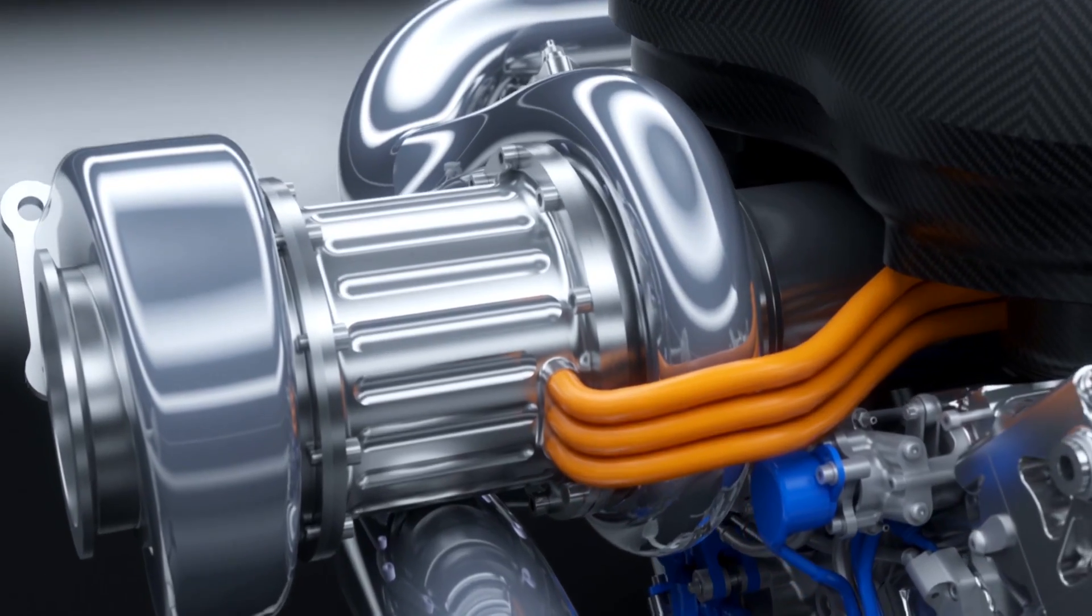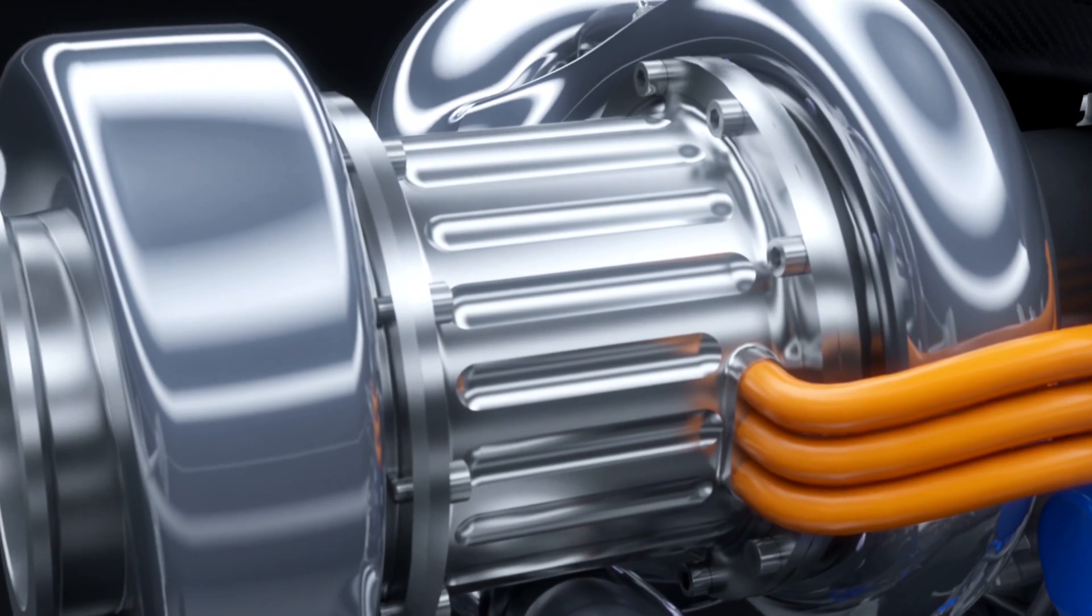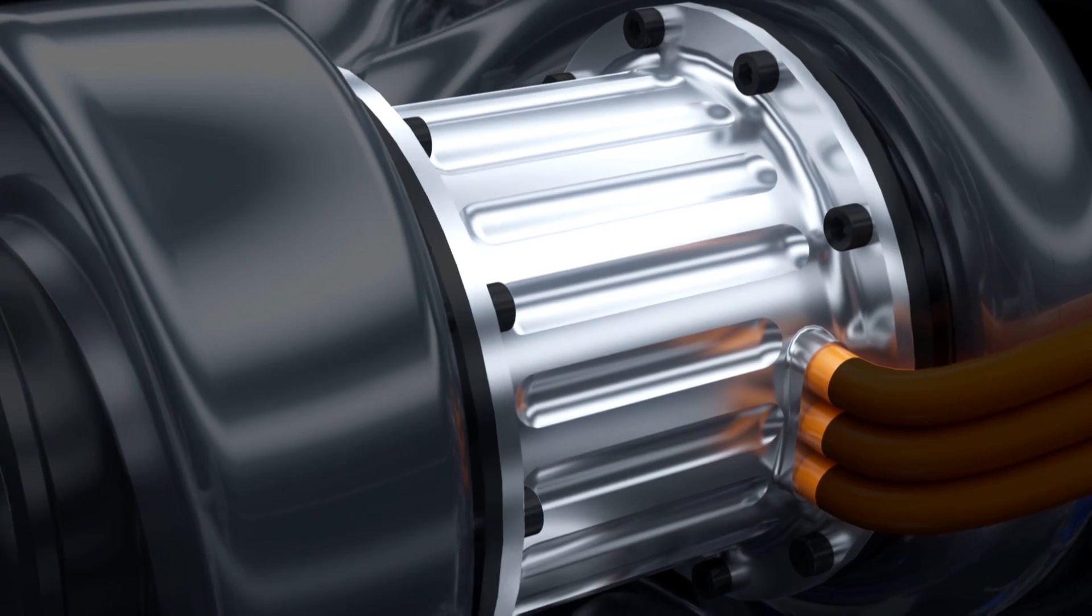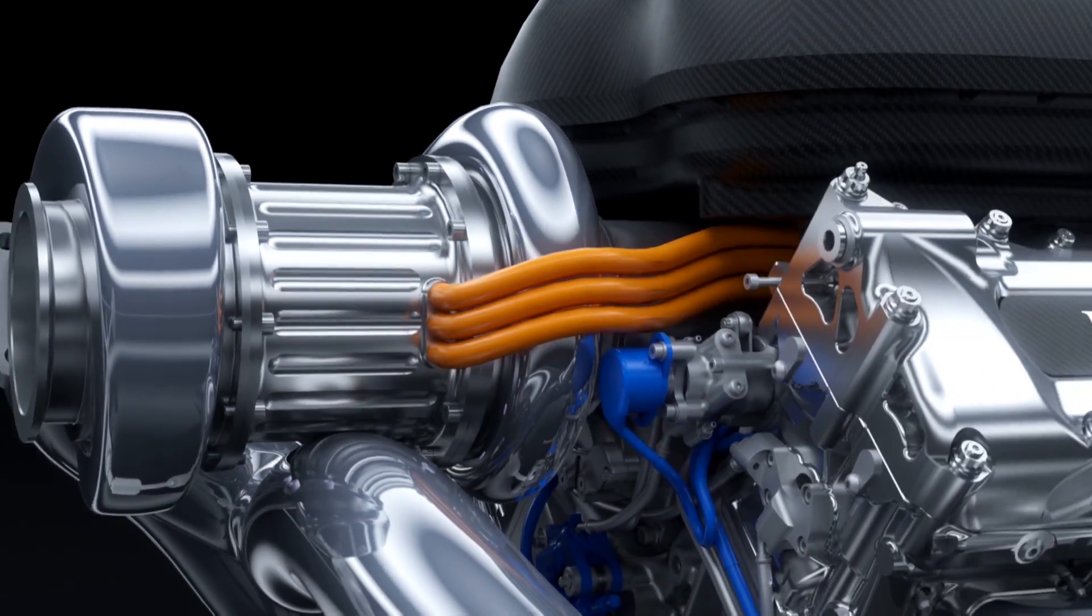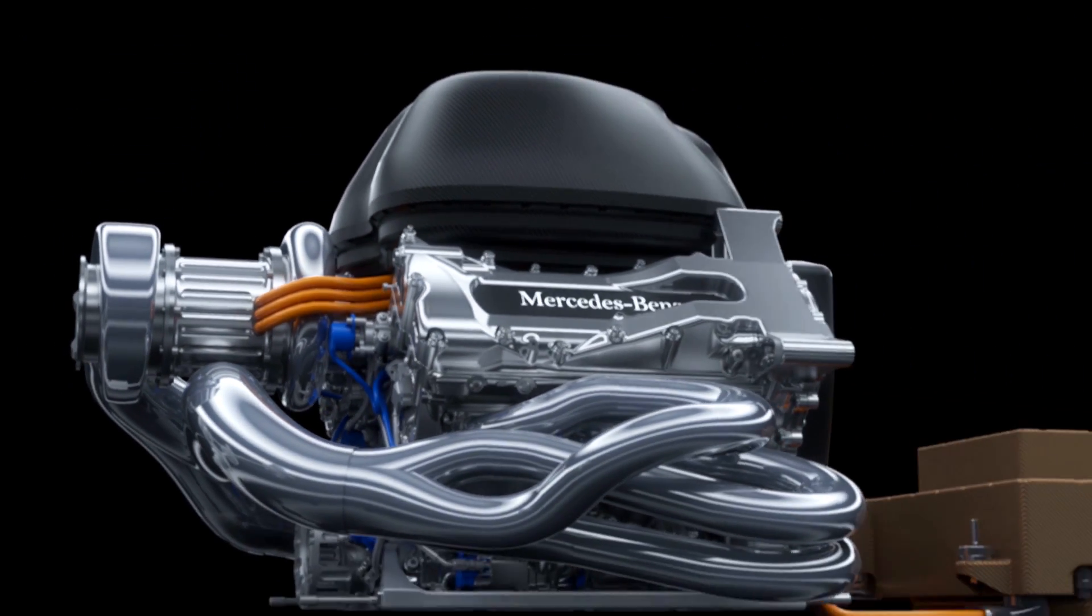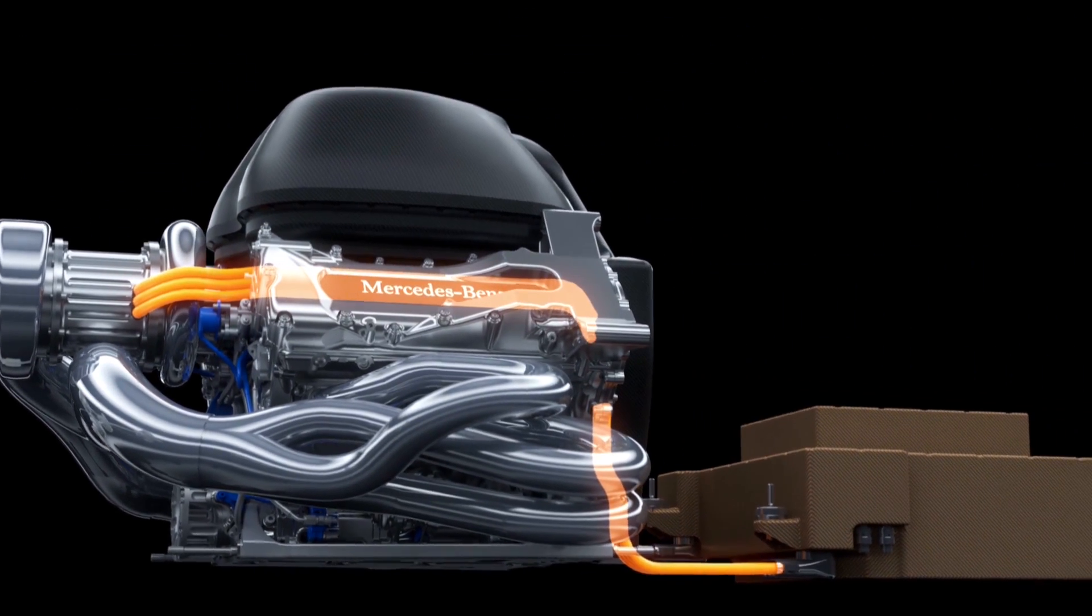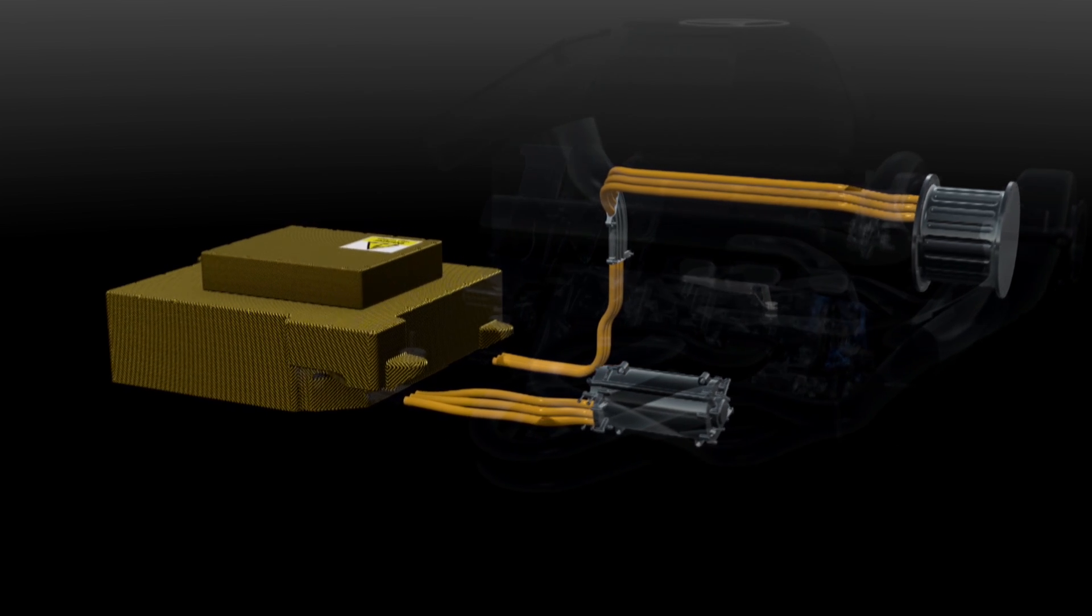The second motor generator unit, the MGU-H, harvests the turbo energy. As a motor, it spins up the compressor to eliminate turbo lag, but it can also send energy directly to the other electric machine and vice versa for maximum efficiency.